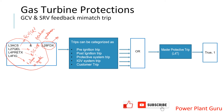These conditions only matter if L28FDX is true — meaning flame is not detected. We are talking about pre-ignition trip, so there is no ignition at all. If you are starting the machine and before ignition any one of these conditions is true, and flame is not detected, then the pre-ignition trip passes and goes to L40, which trips the machine. For example, if there is a position mismatch error and flame is not detected, the circuit activates and trips the machine.